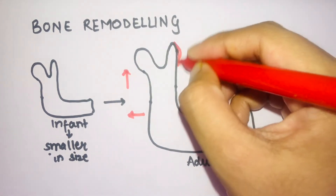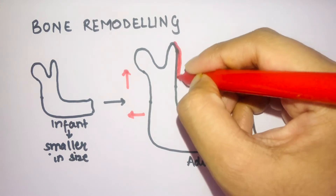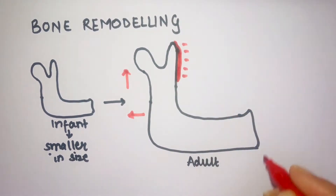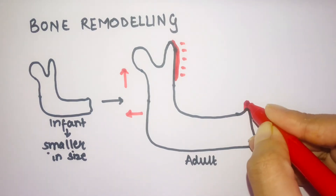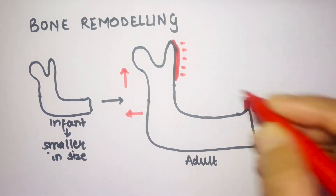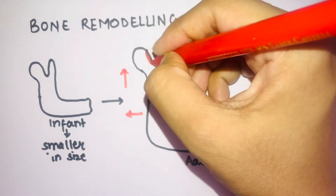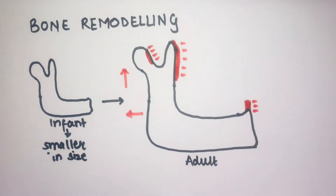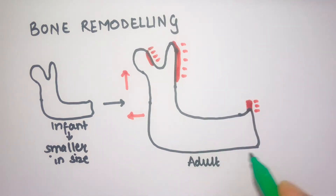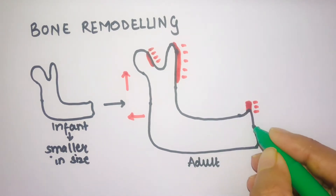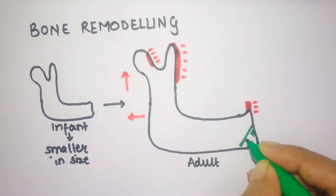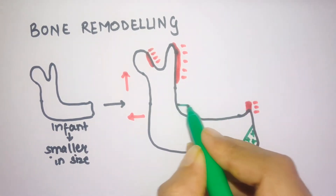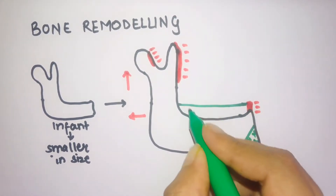The red areas indicate resorption. The anterior portion of the ramus gets resorbed, the area near the chin gets resorbed, and near the condylar head a small portion also gets resorbed. There is deposition of bone near the chin area and deposition in the alveolar area.